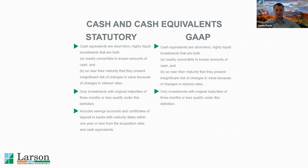For cash and cash equivalents, generally it's the same between statutory and GAAP, except one additional type of investment is included under statutory. Statutory cash and cash equivalents also includes savings accounts and certificates of deposits in banks with maturity dates within one year or less from the acquisition date, whereas within GAAP, it's usually just an original maturity of three months or less.